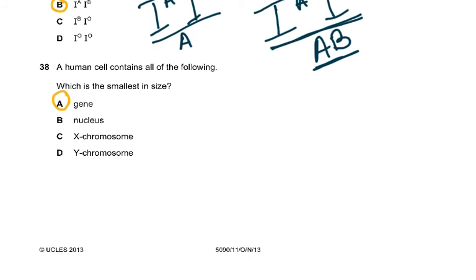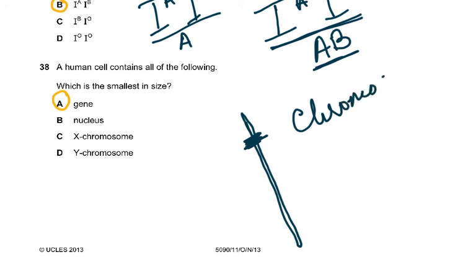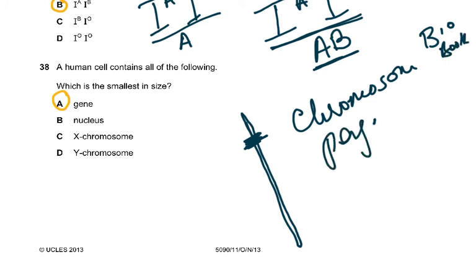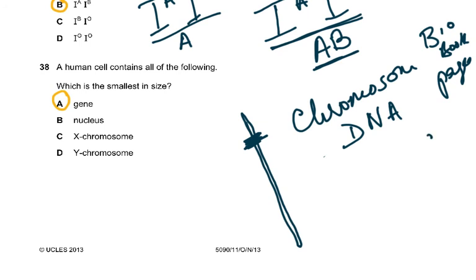Question 38: A human cell contains all of the following — what is the smallest in size: gene, nucleus, X chromosome, Y chromosome? A gene is a portion of a chromosome, so it is the smallest structure. Think of it this way: the chromosome is like a biology book, the pages are DNA, and the chapters are genes. So the chromosome is made of DNA, and a gene is a portion of the chromosome — the smallest of those structures.